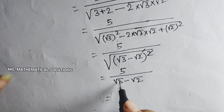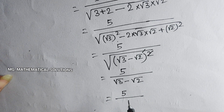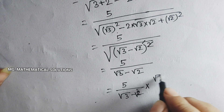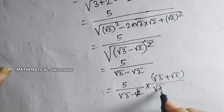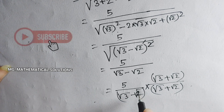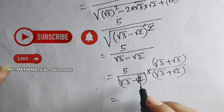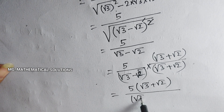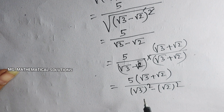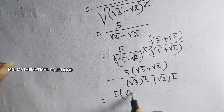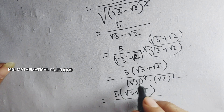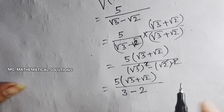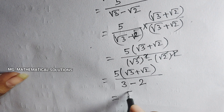We multiply numerator and denominator by (root 3 plus root 2), giving 5 times (root 3 plus root 2) divided by (root 3 minus root 2)(root 3 plus root 2). This uses the formula a squared minus b squared, so the denominator becomes 3 minus 2, which equals 1.